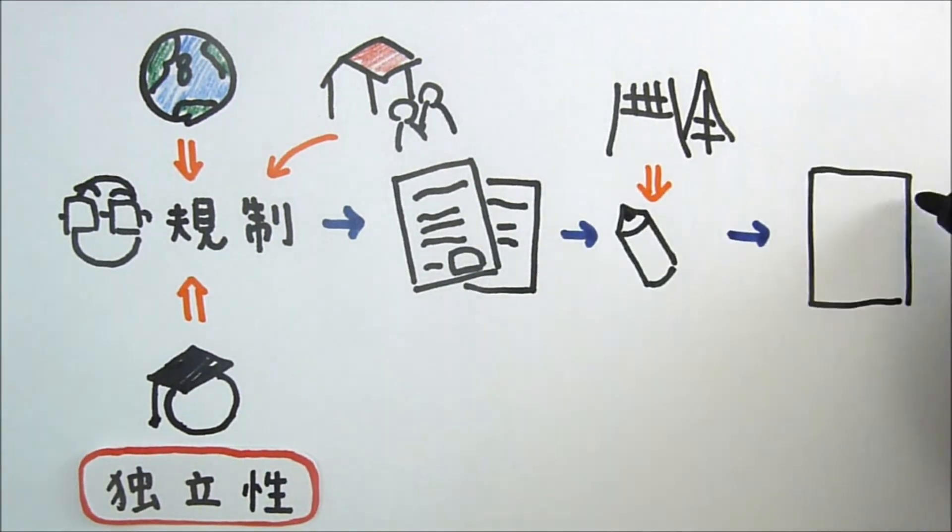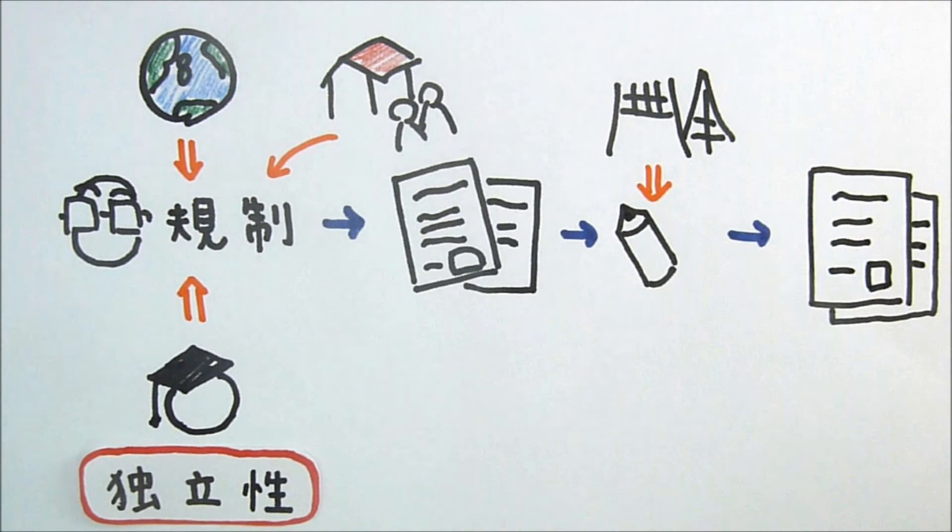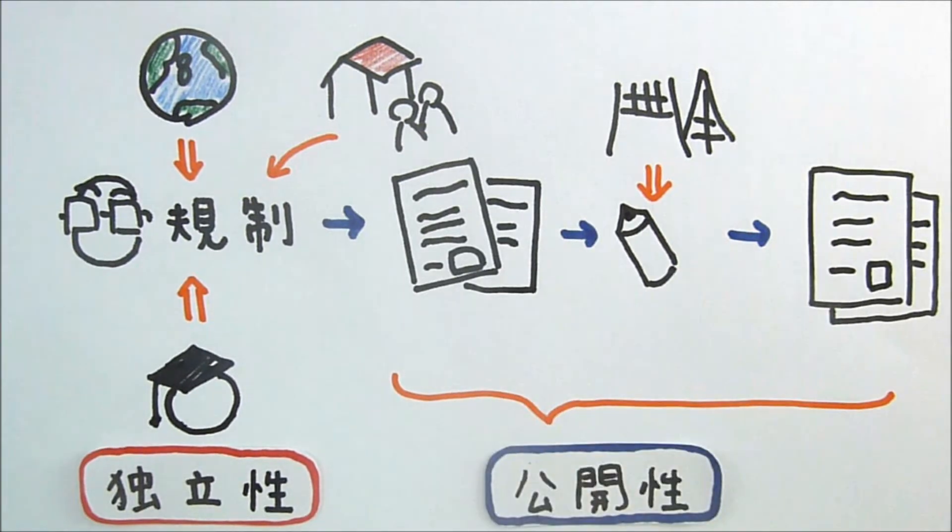In addition, regulators must discuss the effectiveness of their measures with plant operators and take necessary steps to ensure safety. The whole process should be shared with the public as soon as possible.